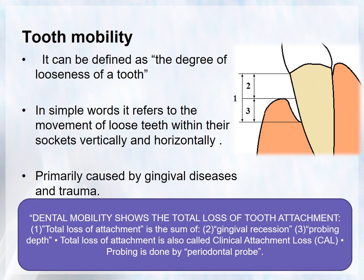What is tooth mobility? It can be defined as the degree of looseness of a tooth. In simple words, it refers to the movement or loosening of teeth within the sockets, either vertically or horizontally. It is primarily caused by gingival diseases and trauma. Dental mobility shows the total loss of tooth attachment, which is the sum of gingival recession as well as the probing depth.